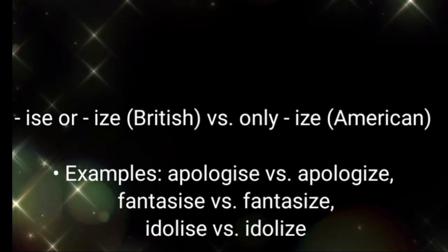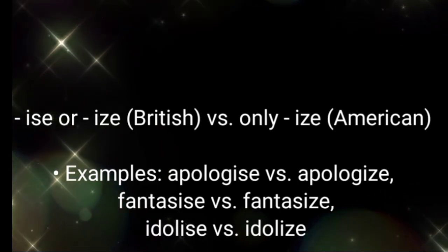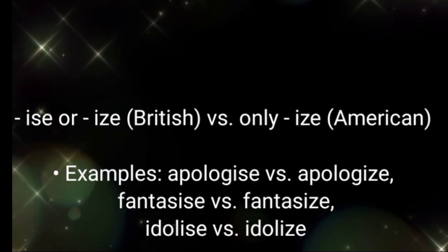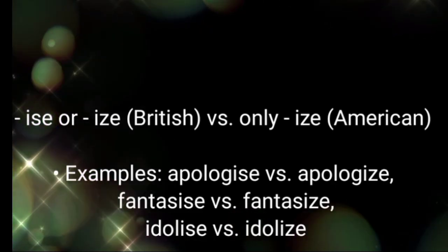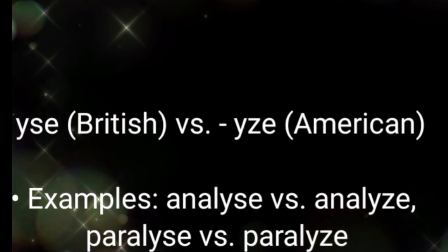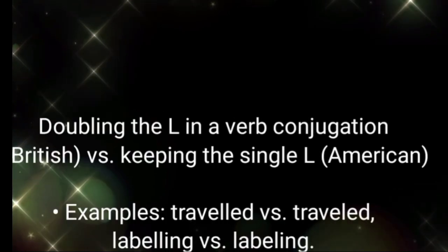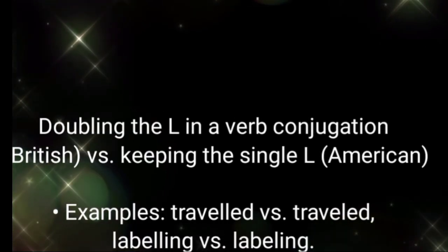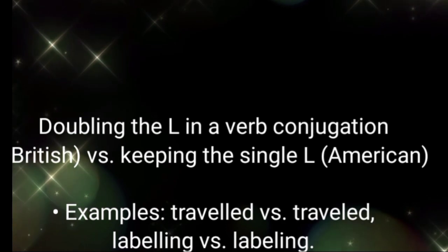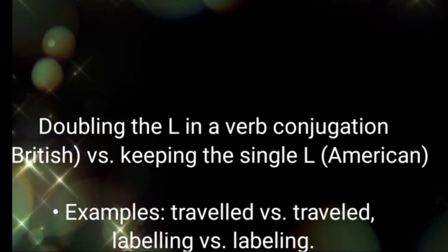Another pattern: '-ise' or '-ize' (British) versus only '-ize' (American) — examples include apologise versus apologize, fantasise versus fantasize, idolise versus idolize. Similarly, '-yse' (British) versus '-yze' (American) — examples include analyse versus analyze, paralyse versus paralyze. Also, doubling the L in verb conjugations (British) versus keeping a single L (American) — examples include travelled versus traveled, and labelling versus labeling.